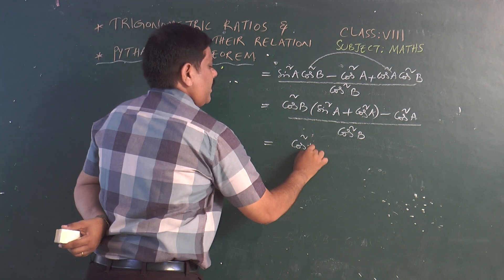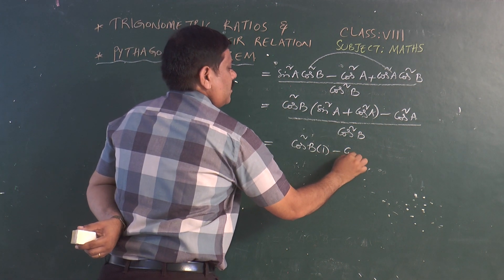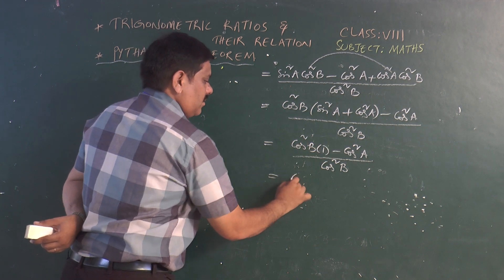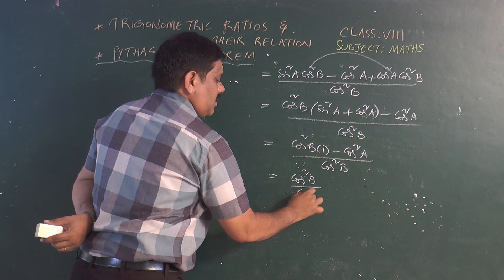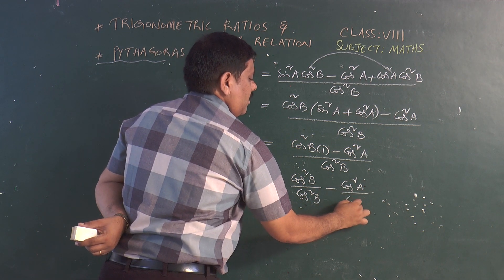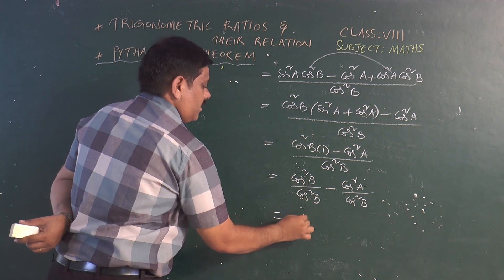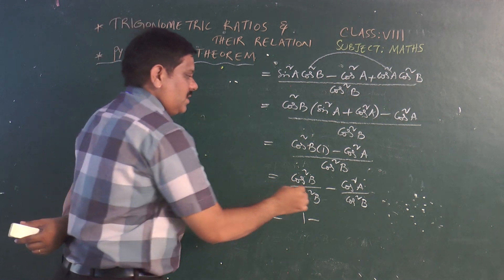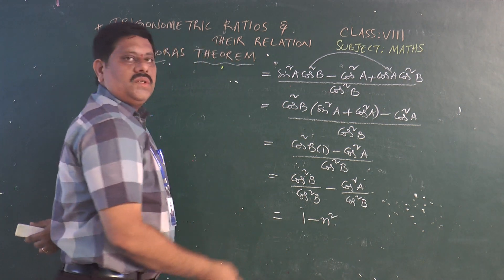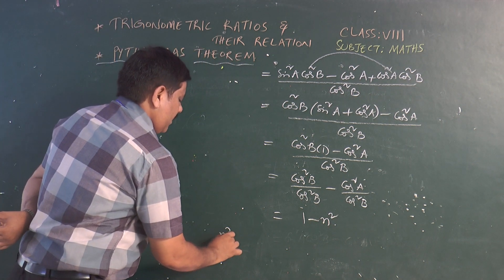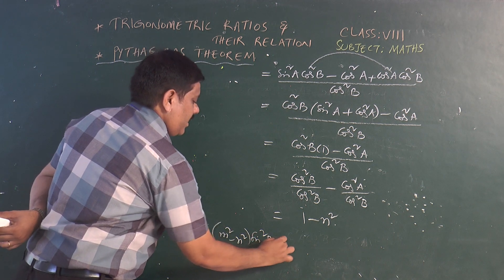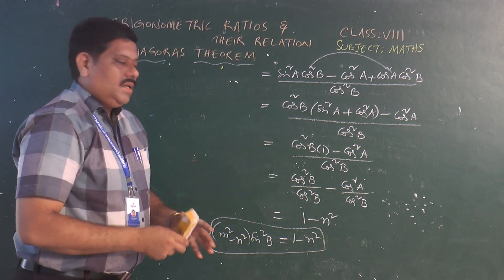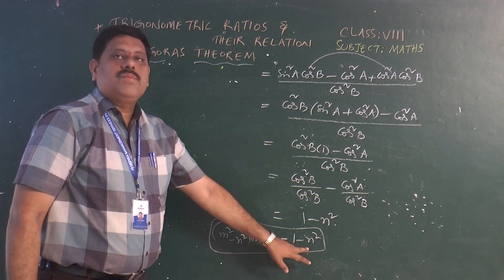Since sin² A + cos² A = 1 by the Pythagorean identity, we have cos² B times (1 minus cos² A / cos² B). This simplifies to 1 minus (cos A / cos B)², which is 1 minus n². So m² minus n² times sin² B equals 1 minus n².